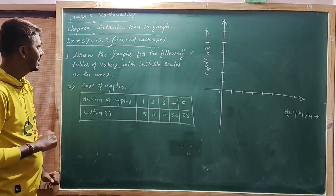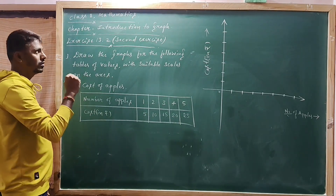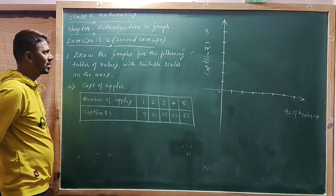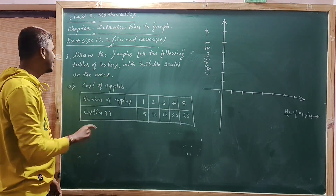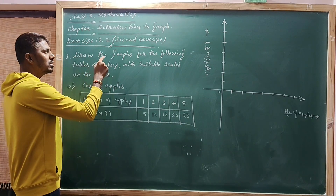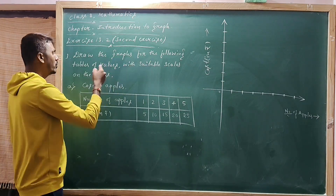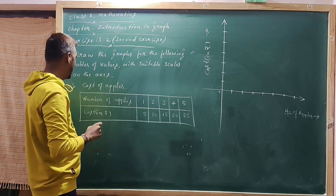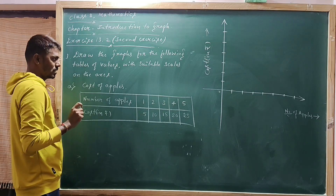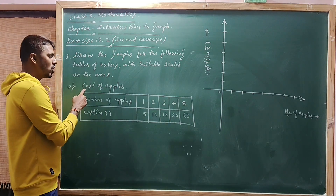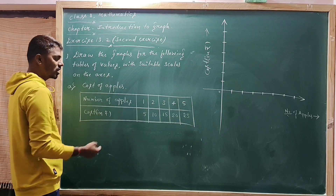This is the first question. Draw the graphs for the following tables of values with suitable scales on the axes — axis being the plural form. The first question is the cost of apples. Observe the given table.